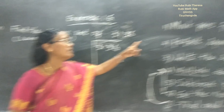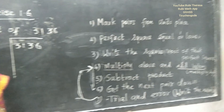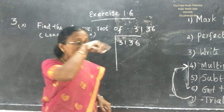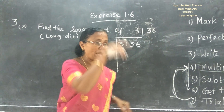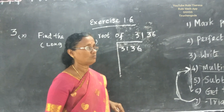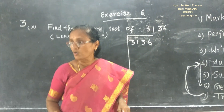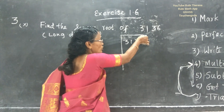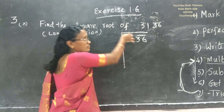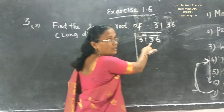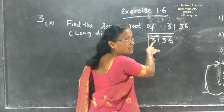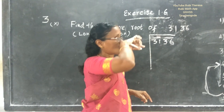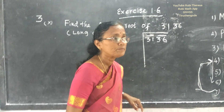The first step is to mark pairs from the unit place. Mark pairs — pair means two. So from the unit place, draw a line: 36 is one pair, 31 is the next pair. That is 3136 grouped as 31 and 36. Do you follow? Yes, ma'am.